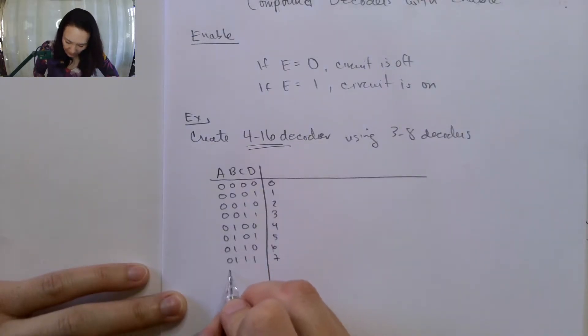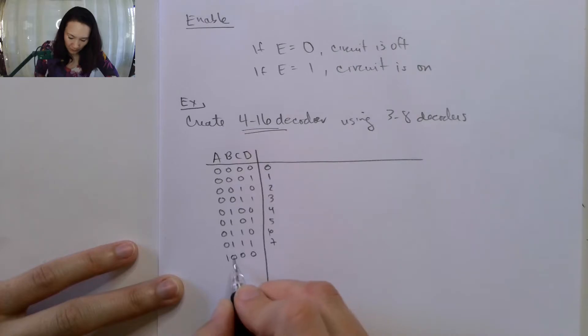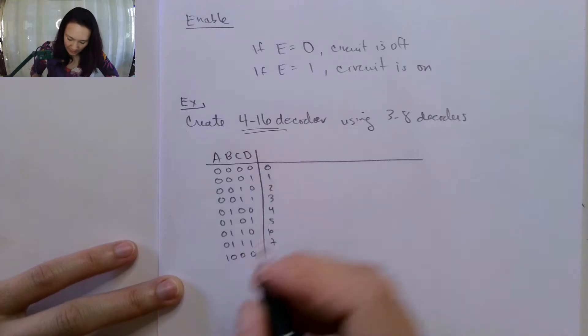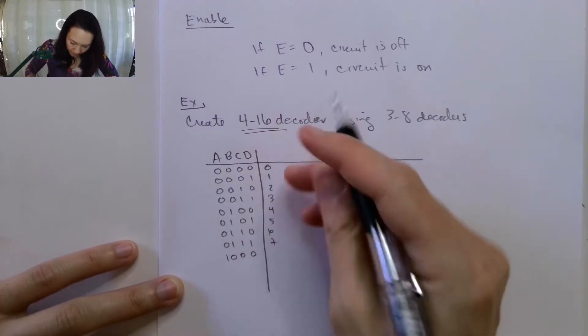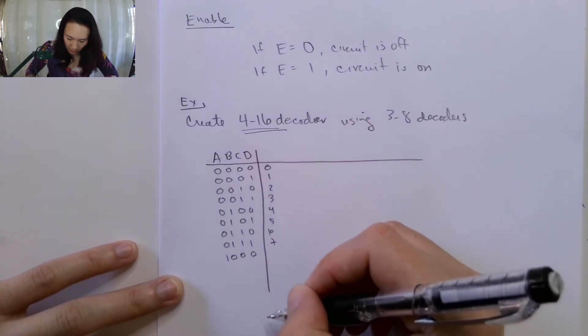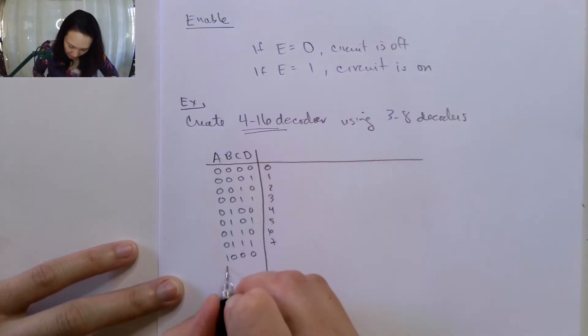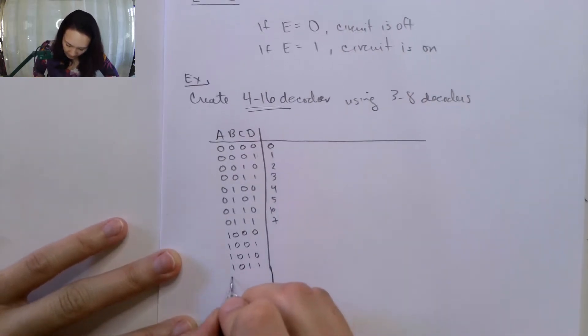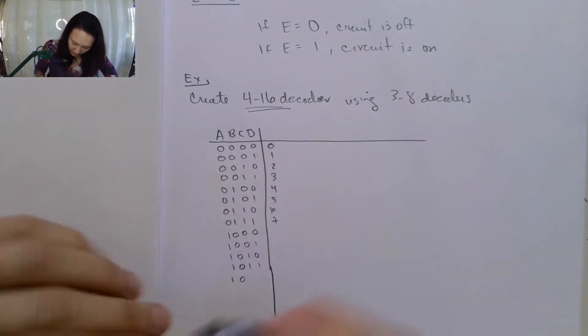Now the next bit is 8. This is when we actually flip this A bit, and then the B, C, D goes back to 0. So this actually goes back to our original state here, and all of the B, C, D inputs are going to be identical between here and here. The only difference is that the A line is going to be on. This is going to be a hint for us that maybe we can use this A to switch between decoders.